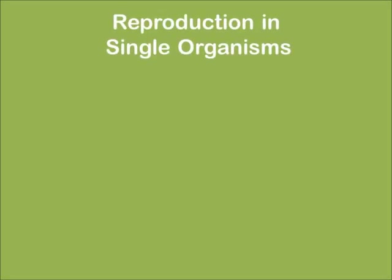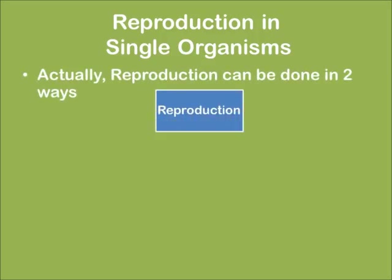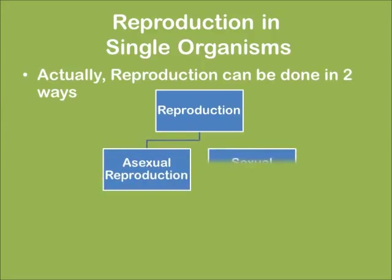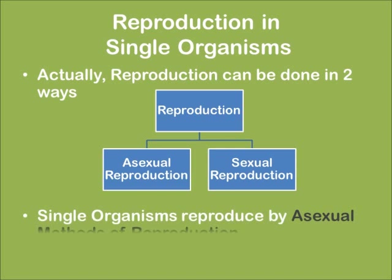Reproduction in single organisms: reproduction can be done in two ways — asexual reproduction and sexual reproduction. Single organisms reproduce by asexual methods of reproduction.